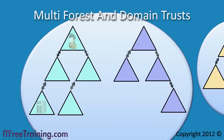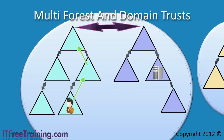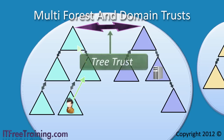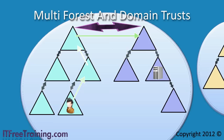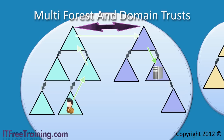Let's look at a different example. Say this domain wants to access this domain. It would go up to its parent. Its parent would pass the request to the root domain. The root domain would pass the request via a transitive trust automatically created between the trees in the forest. This trust is called a tree trust — it is essentially the same as a parent-child trust and is created automatically by Active Directory. Once the request passes over the tree root trust, it would finally be passed down by this domain to its child. In order to get to its destination, the request had to go over 4 transitive trusts, all of which were created automatically.